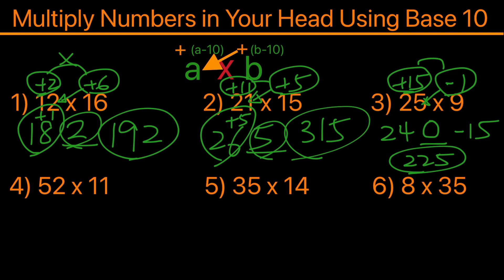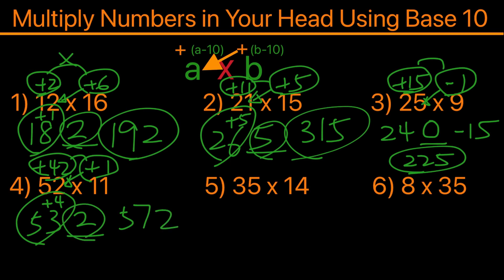For example 4, 52 times 11, this will be 42 over 10 and the 1 will be 1 over 10. Using the same process, we take the 1 added to 52, so we got 53 with a space behind. Then we take the 42 times 1, we have 42, so we place a 2 and a plus 4 above. This will come out to 57 and then 2, so the answer for example 4 would be 572.